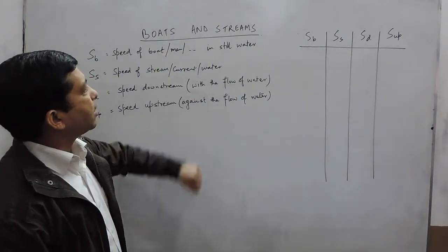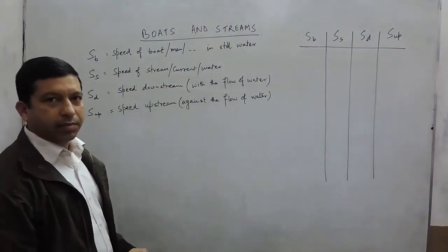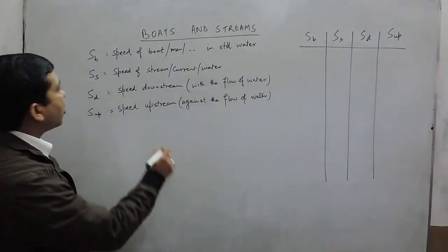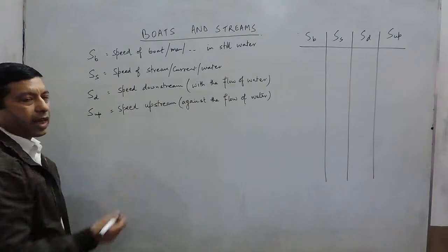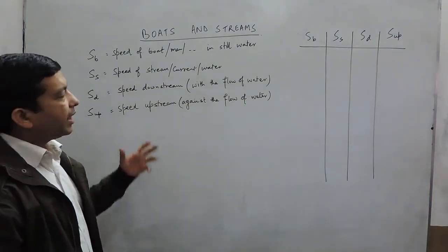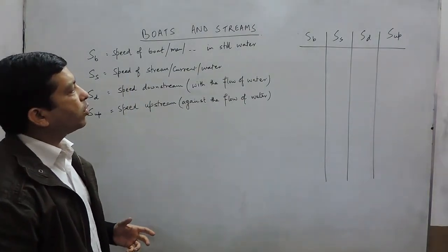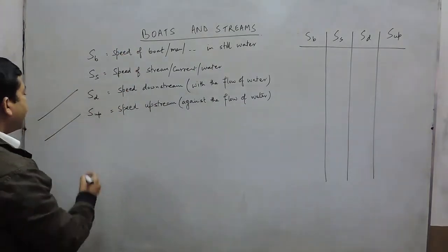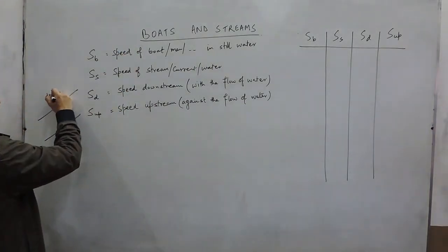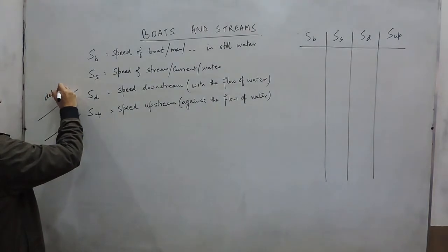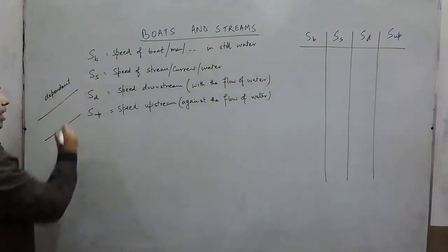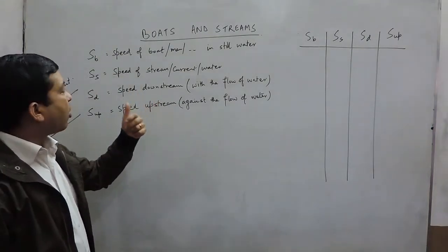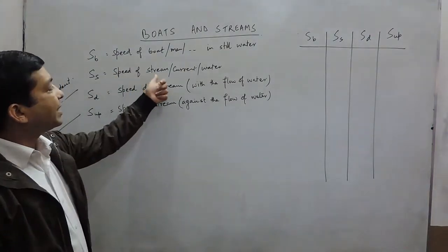In this video we are discussing boat and stream, which is a further part of the chapter time and distance. We already understood that when we talk about races, it is the independent motion of two bodies. Now when we talk about boat and stream, it is dependent motion — the speed of the boat also depends on the speed of the stream.